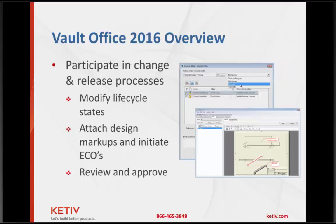When you have engineering change orders and different groups need to review what the change is — purchasing may need to get new bids, manufacturing may need to ensure that changes in machining processes are sufficient for what machines they have — they can participate in those change order processes by reviewing what changes have been made and then giving their official approval for the change order to move to the next step.